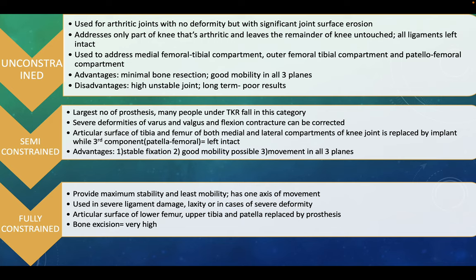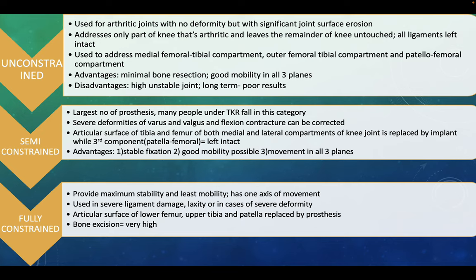The unconstrained prosthesis is used for arthritic joints with no deformity but with significant joint surface erosion. It addresses only the part of the knee that's arthritic and leaves the remainder untouched with all ligaments left intact. It is used to address the medial femoral-tibial compartment, outer femoral-tibial compartment, and patellofemoral compartment. Advantages: minimal bone resection and good mobility in all three planes. Disadvantages: highly unstable joint and poor long-term results.